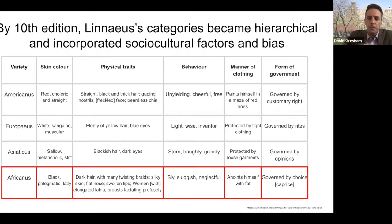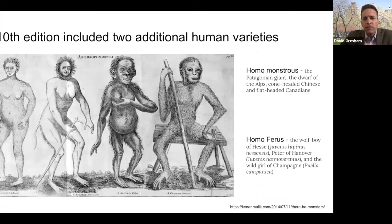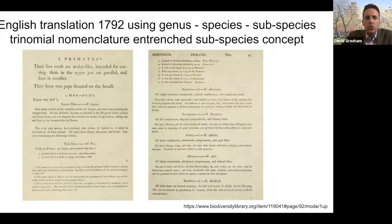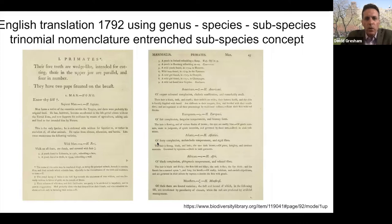In addition to these four varieties of humans, Linnaeus also included two additional varieties — homo monstrous and homo ferus. I include this for historical context so you can see some of Linnaeus' thinking and question whether it necessarily resulted from empirical research. It was in the English translation in 1792 that Linnaeus introduced trinomial nomenclature of genus, species, and subspecies, and in doing so he entrenched the idea that there are different subspecies of humans — a concept that persisted for many, many years.